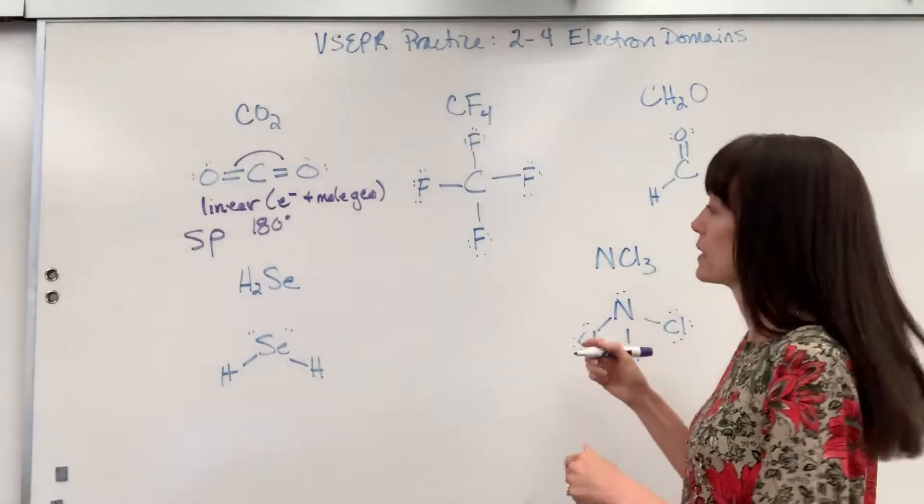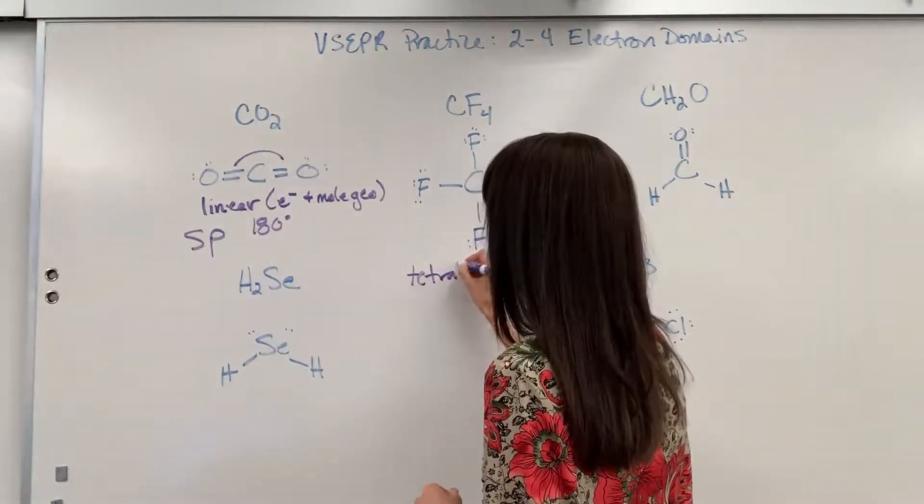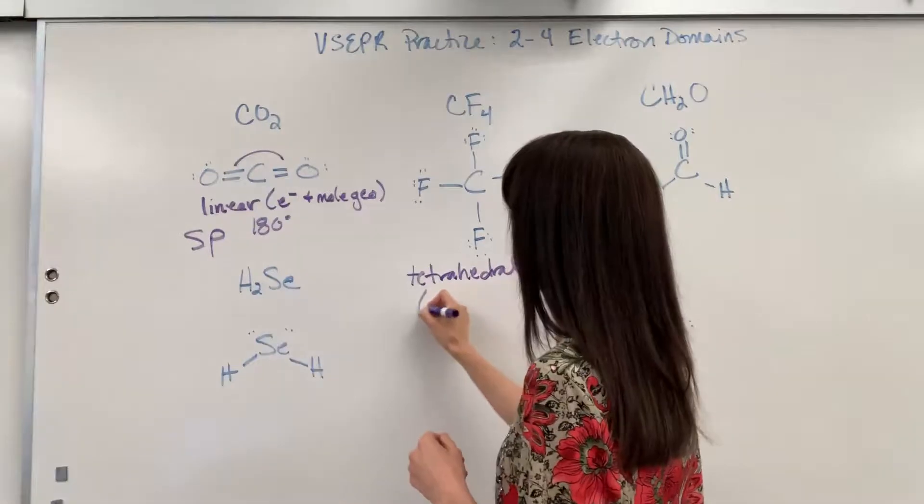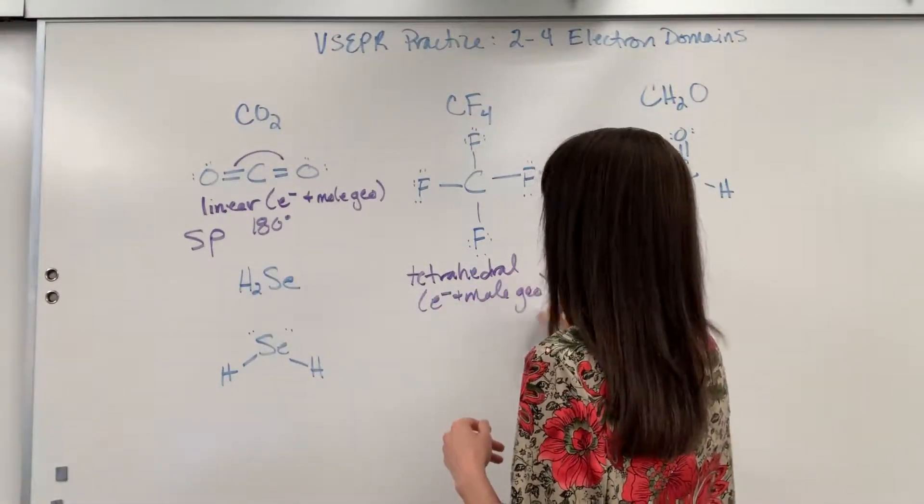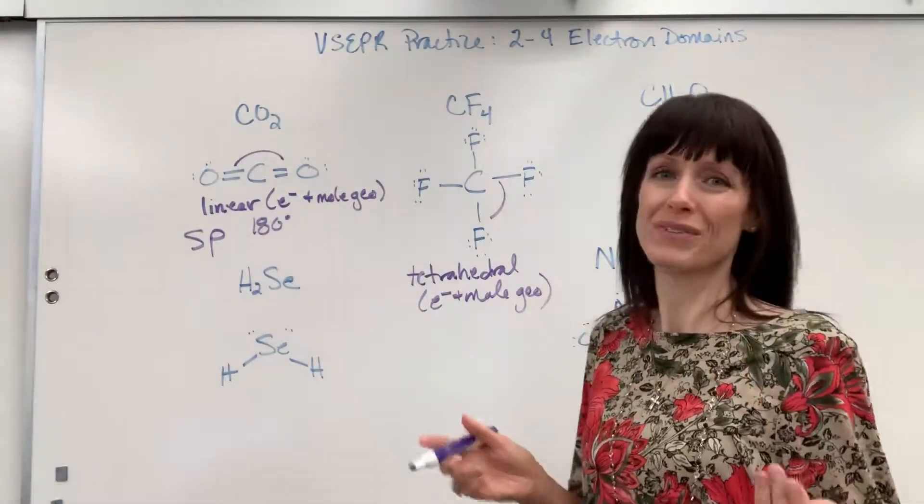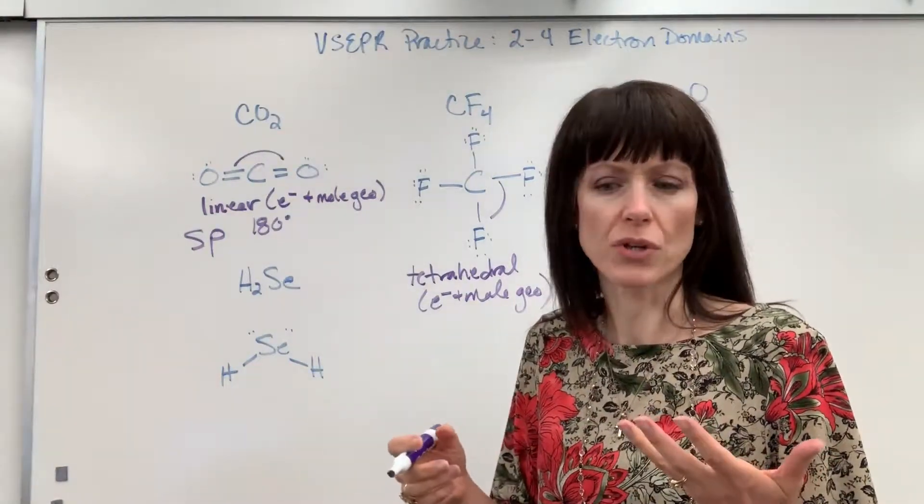So for electron domains, this is going to be tetrahedral, tetra meaning four. That's how I remember that one. And that's going to be for both the electron and the molecular geometry. Now maximum angle. Here's the danger. We draw that as a beautiful 90 degree angle, but you'll recall this goes three-dimensional.